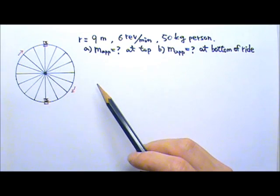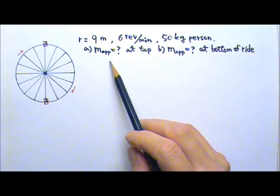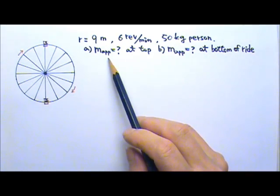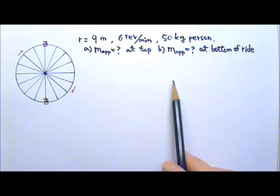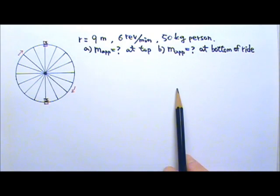We're looking for the person's apparent mass, not the real mass. The real mass is, of course, 50 kg. In this case, we'll have to first find the apparent weight.